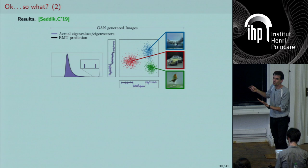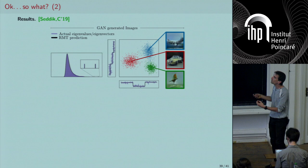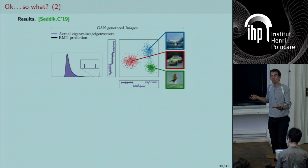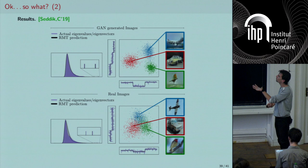GAN images passed through a CNN to extract features also yield concentrated random vectors. Since GAN images closely mimic real images, all our theory applies. Taking GAN-generated images, extracting features through a CNN, and doing spectral clustering: the random matrix theory prediction (black) perfectly matches the actual eigenvalues and eigenvectors (purple) — and the same holds for real images.